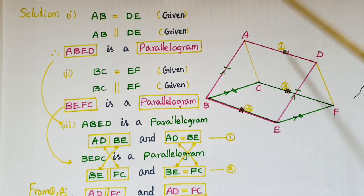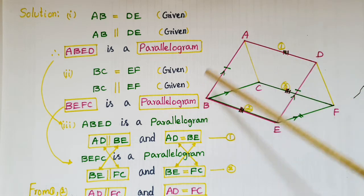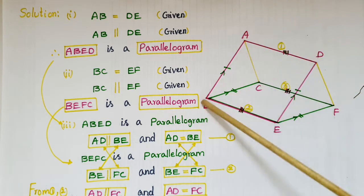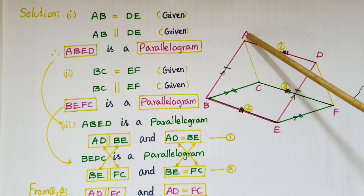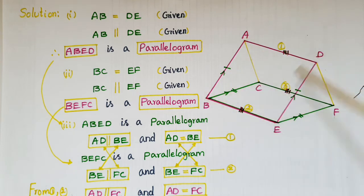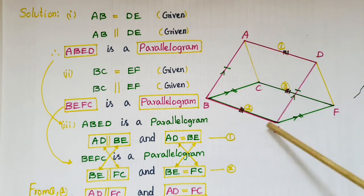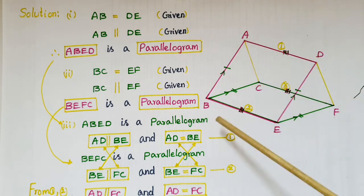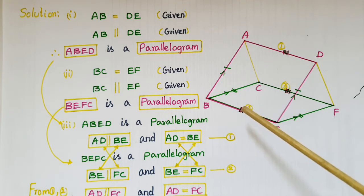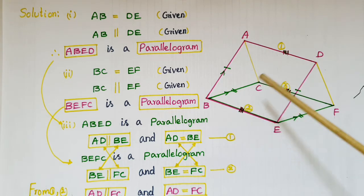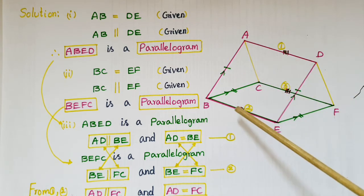First, we have to prove that ABED is a parallelogram. We know that AB is equal to DE — that is given in the problem — and AB is parallel to DE — that is also given. So ABED is a parallelogram, because if one pair of opposite sides are equal and parallel, then the quadrilateral is a parallelogram.